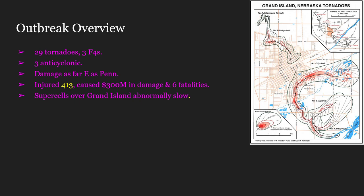On top of the three F4s, there were three anticyclonic tornadoes. Anticyclonic in the northern hemisphere means clockwise rotation. High pressures are called anticyclones, while low pressures are called cyclones. You may have heard tornadoes be called cyclones before — that's kind of where that term comes from, but that's a topic for another video.